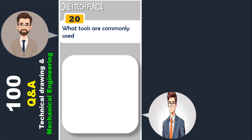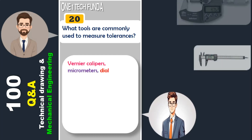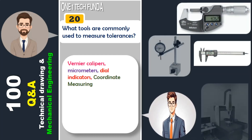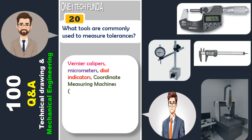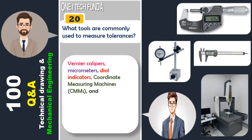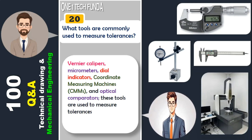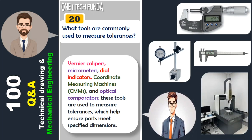What tools are commonly used to measure tolerances? Vernier calipers, micrometers, dial indicators, coordinate measuring machines (CMMs), and optical comparators are used to measure tolerances, which help ensure parts meet specified dimensions.